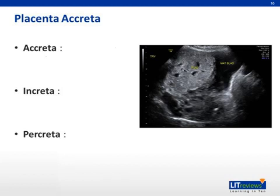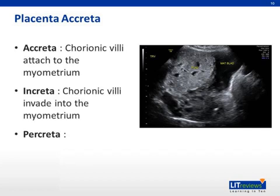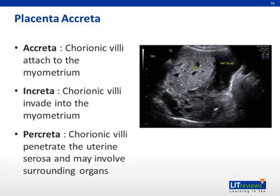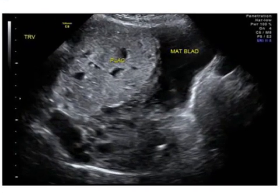Placenta accreta occurs with 5% to 10% of all placenta previa. Placenta accreta occurs due to abnormal placental implantation when placental villi attach to the myometrium, resulting in an abnormally adherent placenta. Increta occurs when chorionic villi invade the myometrium, and placenta percreta occurs when chorionic villi penetrate the uterine serosa and may involve surrounding organs, such as the bladder, as shown in the ultrasound image.